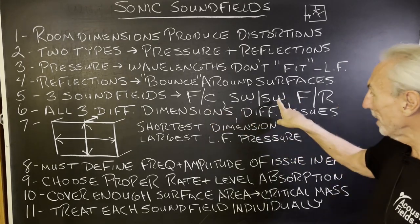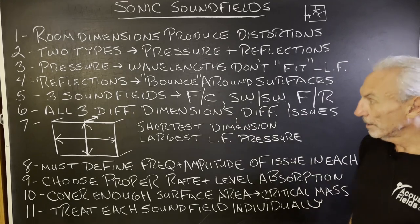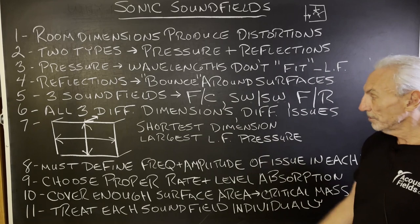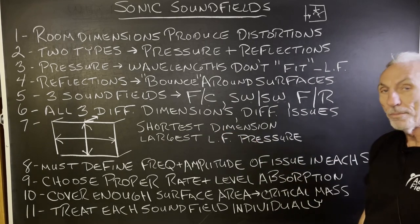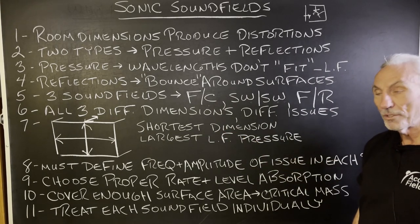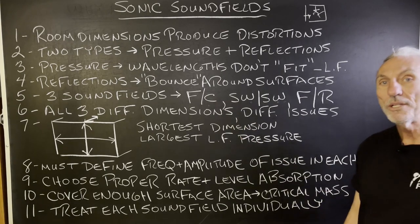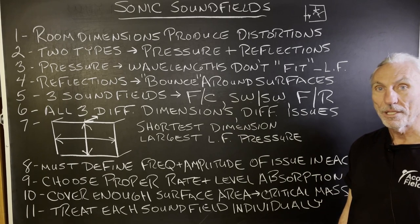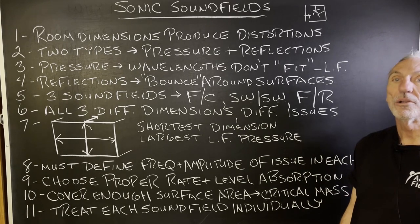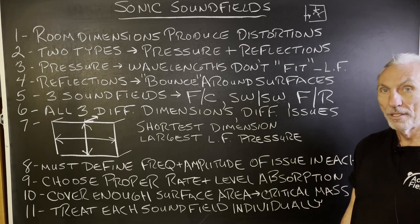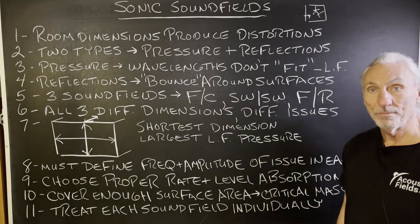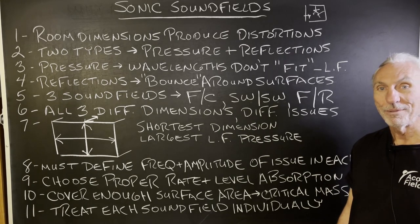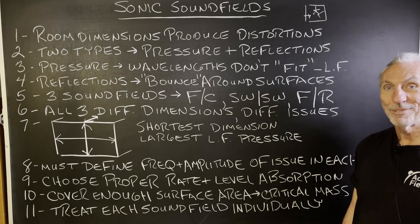We have three sound fields to look at: the floor to ceiling, the sidewall to sidewall, and the front to rear wall. All of these different dimensions produce different issues. The shortest dimension will produce the largest low frequency pressure issue. The shortest dimension in most rooms is floor to ceiling — usually the width and length are longer than the height. People never talk about the floor-to-ceiling problem, and it's often the largest.